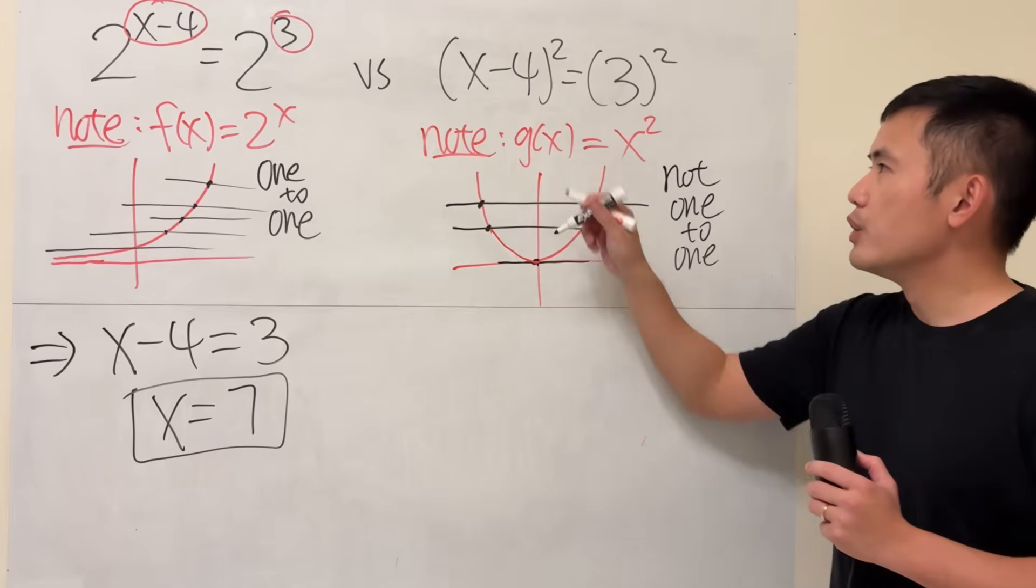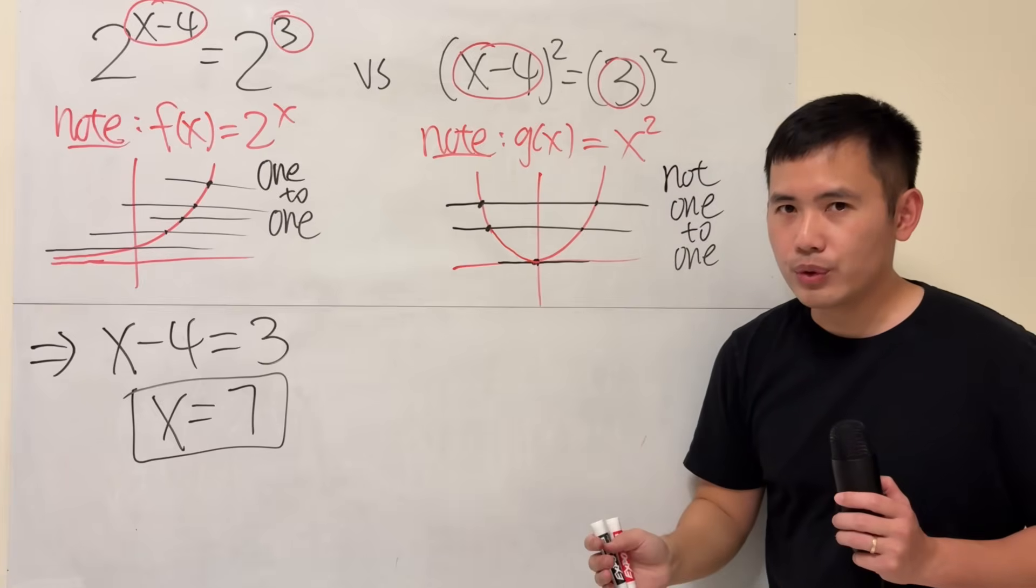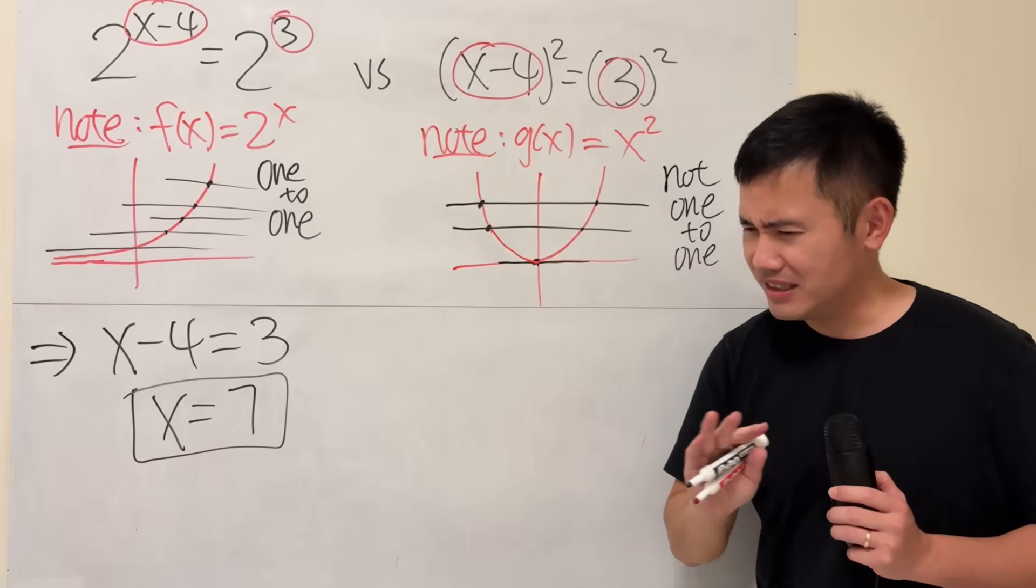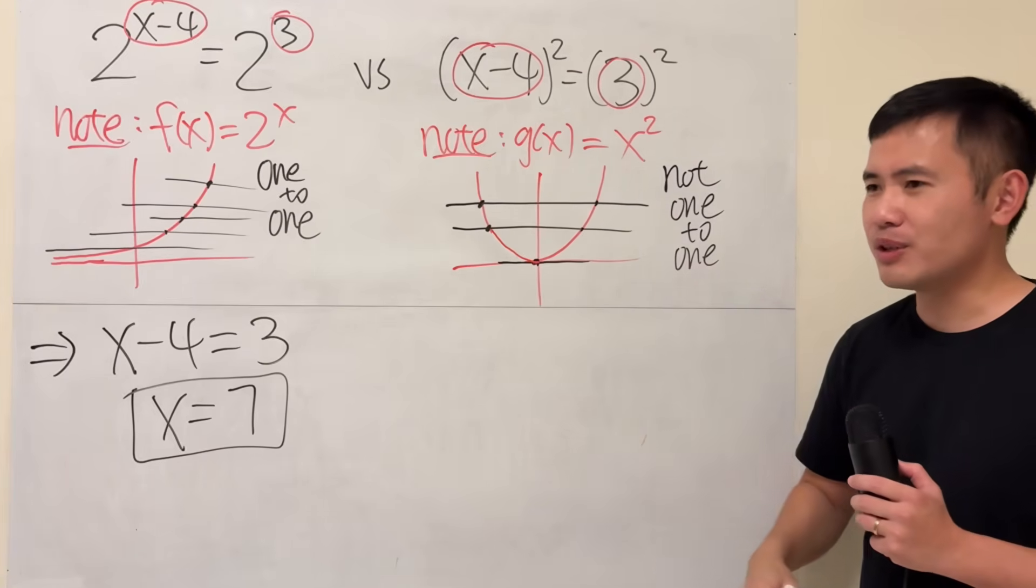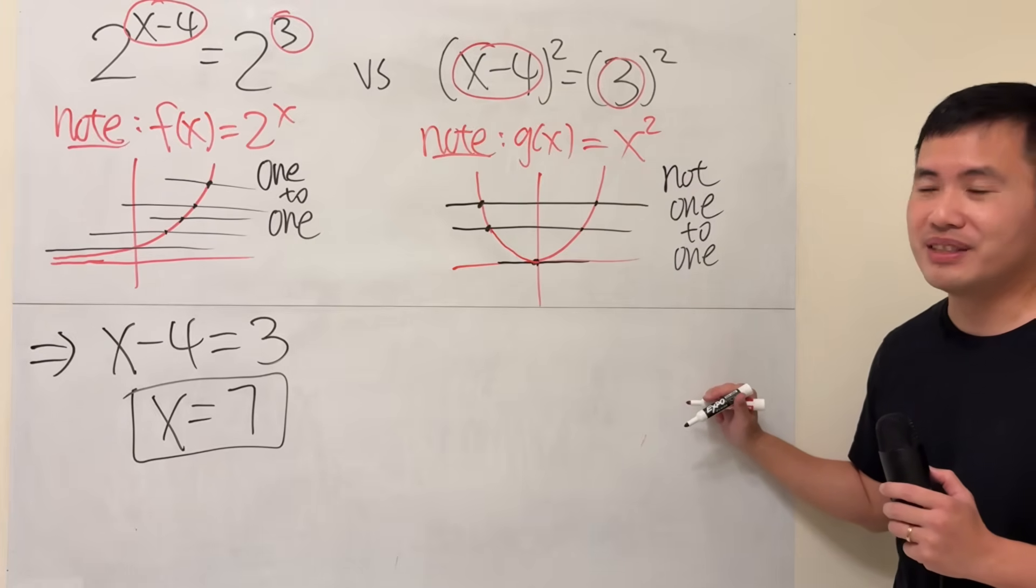So, in this case, we cannot just look at the input and the input and then make them equal to each other. That is just going to give you one answer. It's not enough. It's not wrong. It's just not complete. So, how exactly should we take care of this?